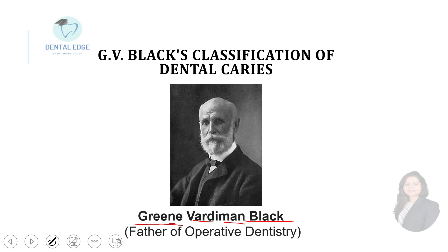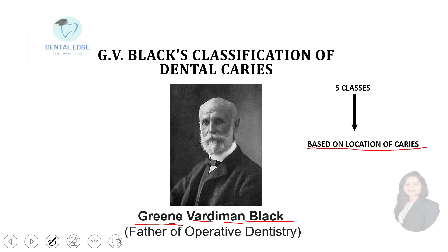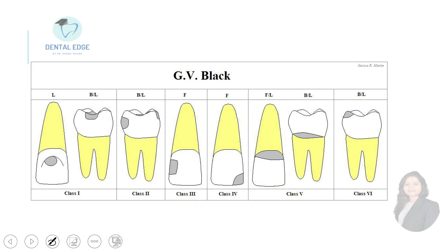He gave five classes based on the location of dental caries. One more class — class 6 — was added later on, so there are six classes in G.V. Black's classification.